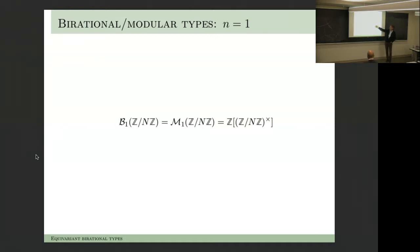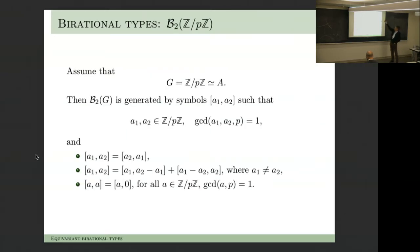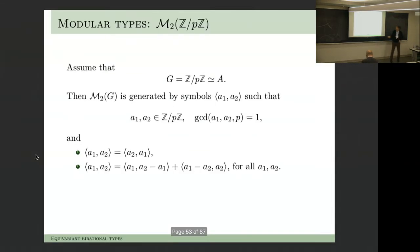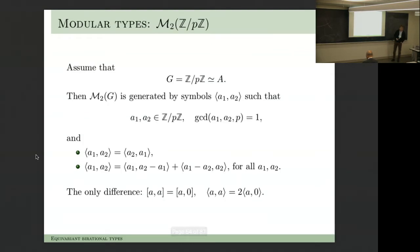Let me show you specific examples in dimension 2. The group B₁ is simply Z/nZ (multiplicative), because we have the condition that gcd(a, n) = 1. For the B₂ type—relevant to dimension 2—let's look at Z/pZ. We're looking at symbols [a₁, a₂] with gcd(a₁, a₂, p) = 1, so not both multiples of p, and symmetric. The modular type M₂ looks just like this—the only difference is that [a, a] is 0 in the birational type but [a, a] equals 2[a, 0] in the motivic type. That's it. So B₂ and M₂ are essentially the same.